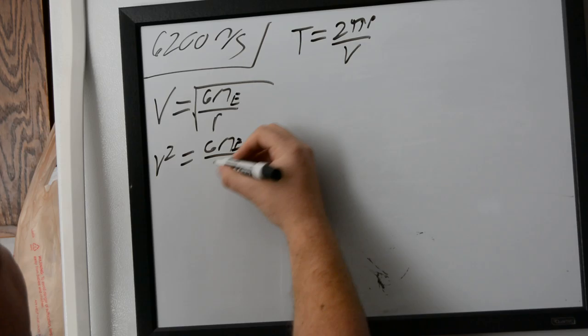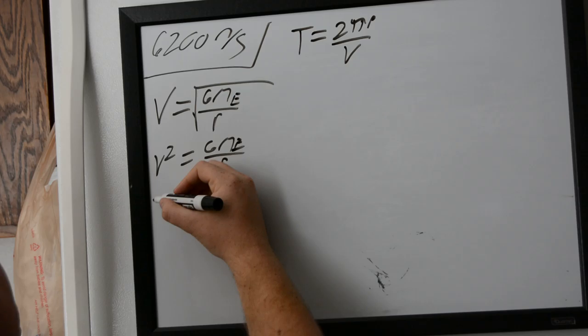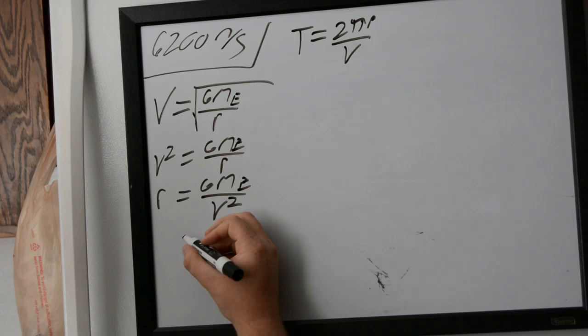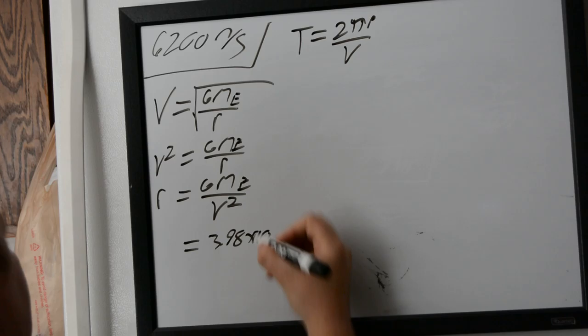So we have v² equals gravitational constant times the mass of the Earth over r. Our velocity squared, and from a previous problem we know that the numerator here is 3.98 × 10^14.